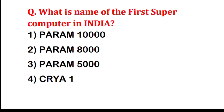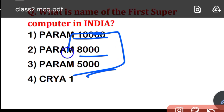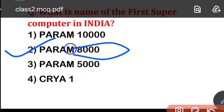What is the name of the first supercomputer in India? The correct answer is PARAM 8000 — that is the second option. You have to remember this: the first supercomputer in India was PARAM 8000.